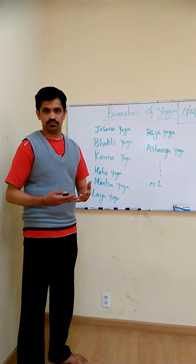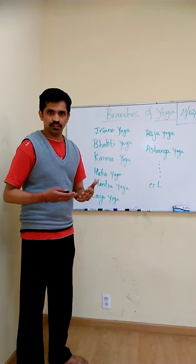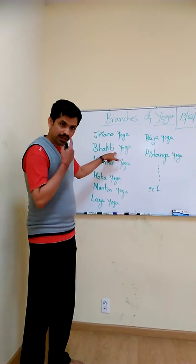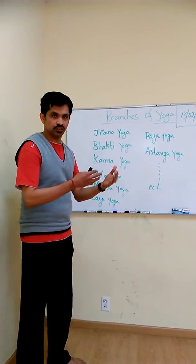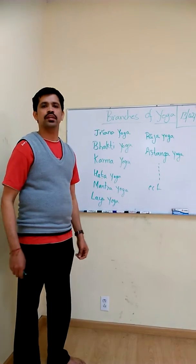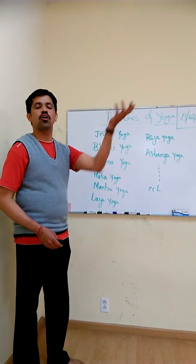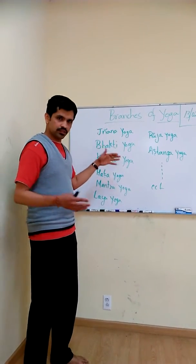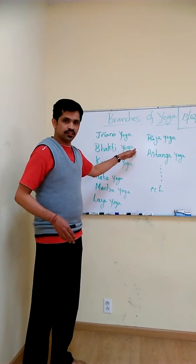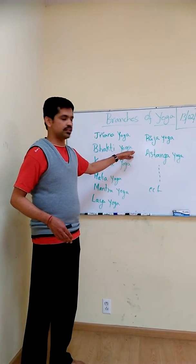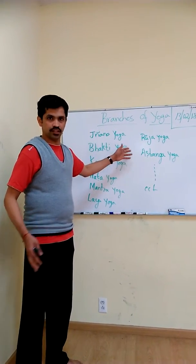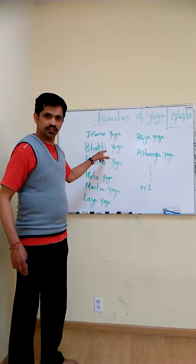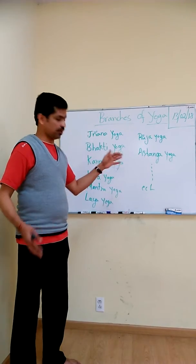Bhakti Yoga is practiced by devotion. Those who are having more emotional personality can practice Bhakti Yoga. The devotion covers the supernatural power of God, of Ishwara — Bhakti. By different kinds of Bhakti, the Navaya Bhakti — these nine types of Bhakti — with all these, the practitioner can attain Samadhi.